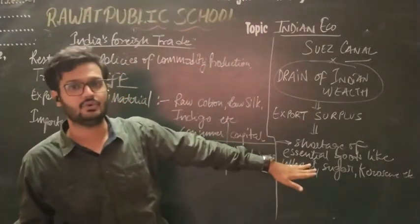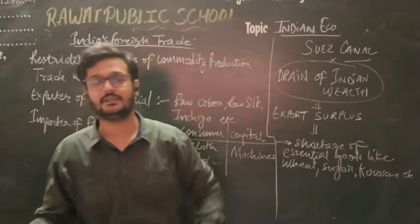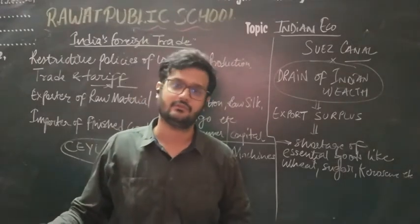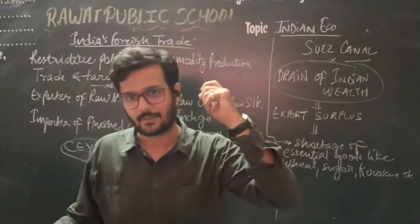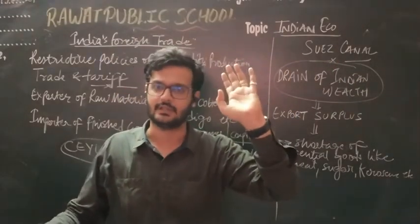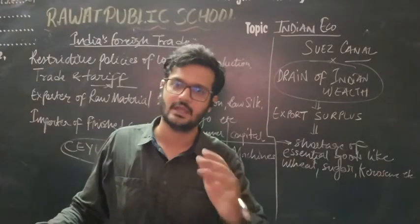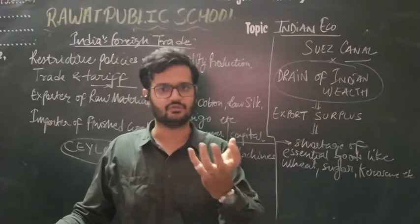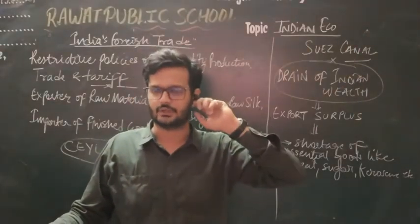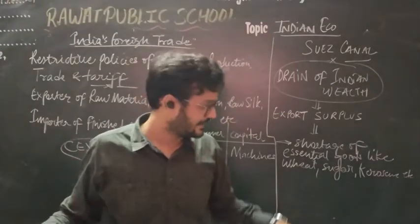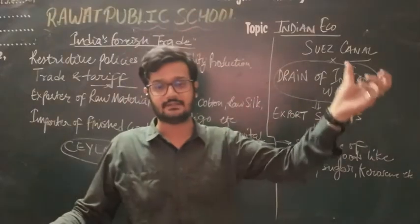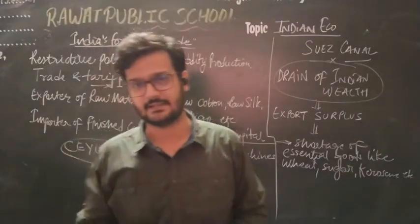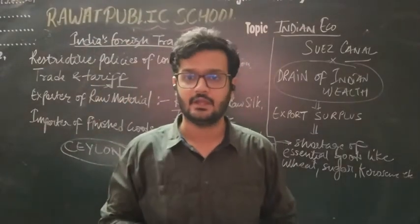There was even a shortage of essential goods — wheat, sugar, kerosene — these essential goods also became scarce because of the export surplus. Everything was being exported — even if the people of our country starved, the British had no concern. All raw materials and essential goods were taken out and exported. Secondly, the gold and silver that India received as payment was also retained by the British.